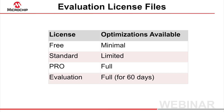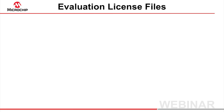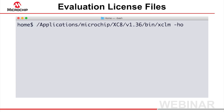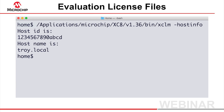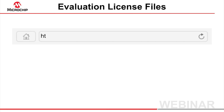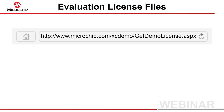To obtain an evaluation license, you will need the host ID of the computer on which your free compiler is installed. If you do not have this recorded, run the compiler's XCLM application with the "-hostinfo." option. You might need to use the explicit path for this application. It is located in the bin directory of your compiler.